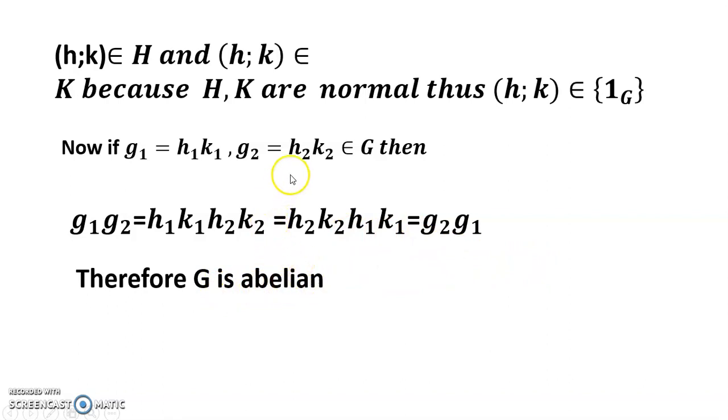Therefore G is abelian, because we know that they are abelian groups H and K. That's why I can change this. Thanks for watching, I think I can clear this concept.